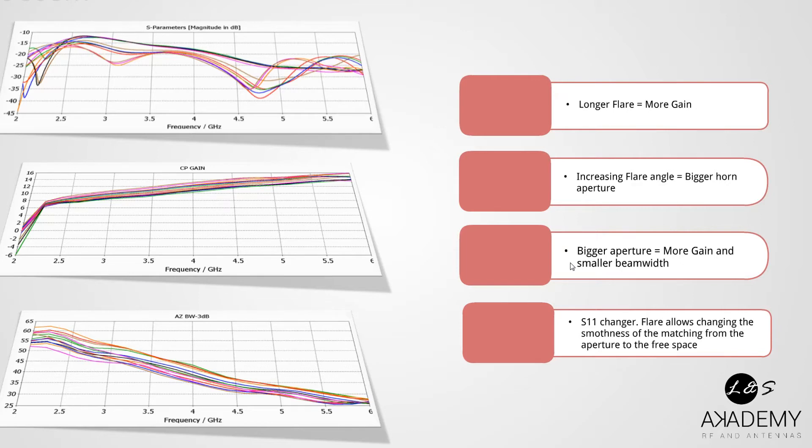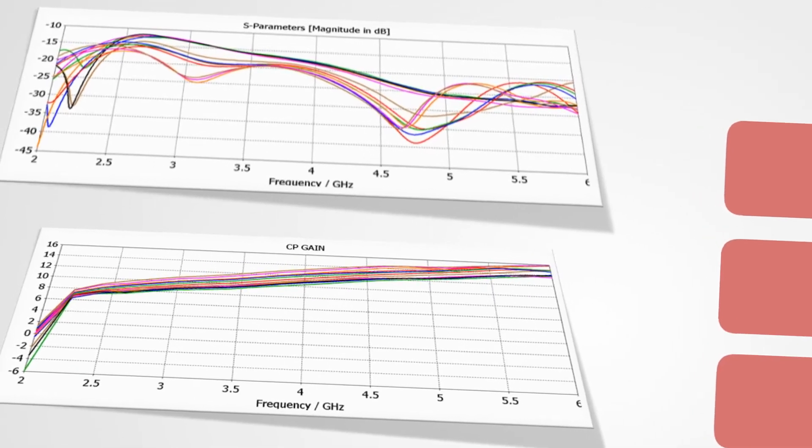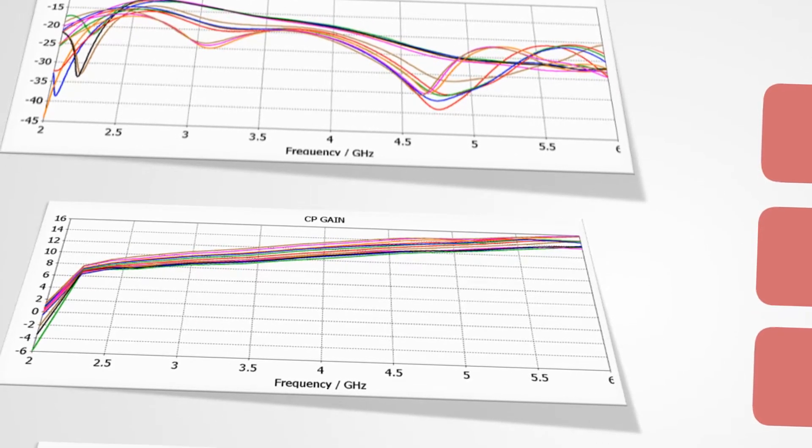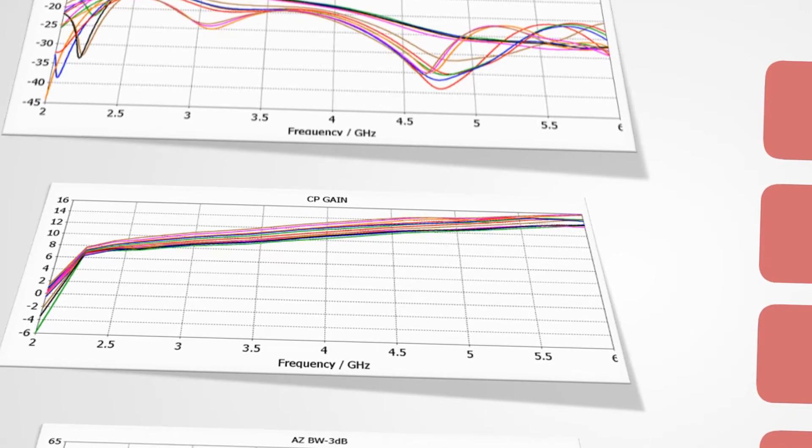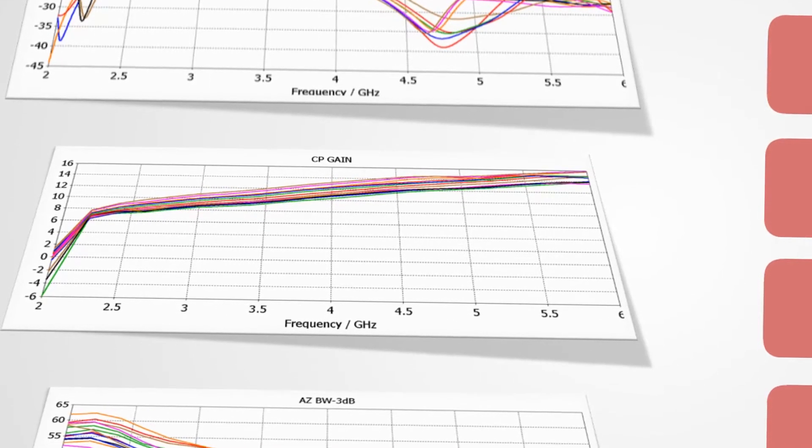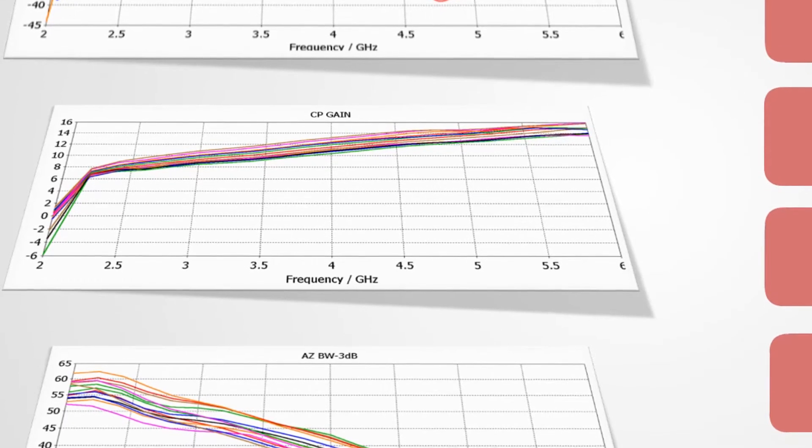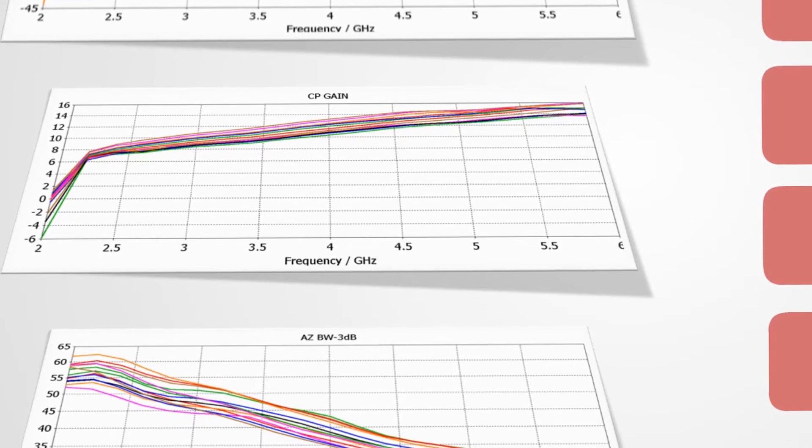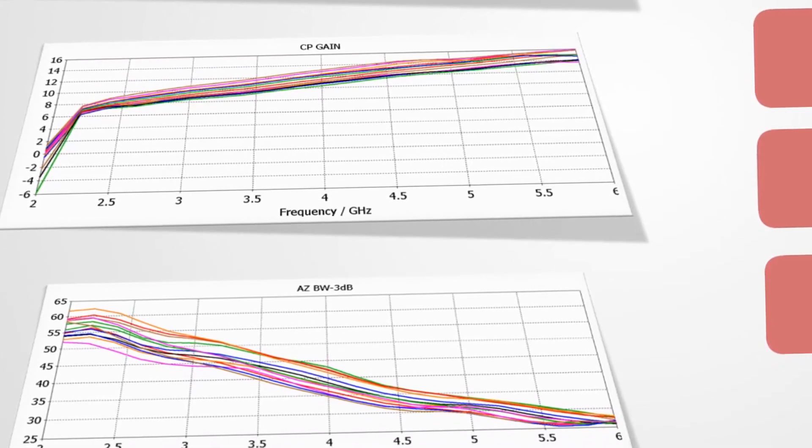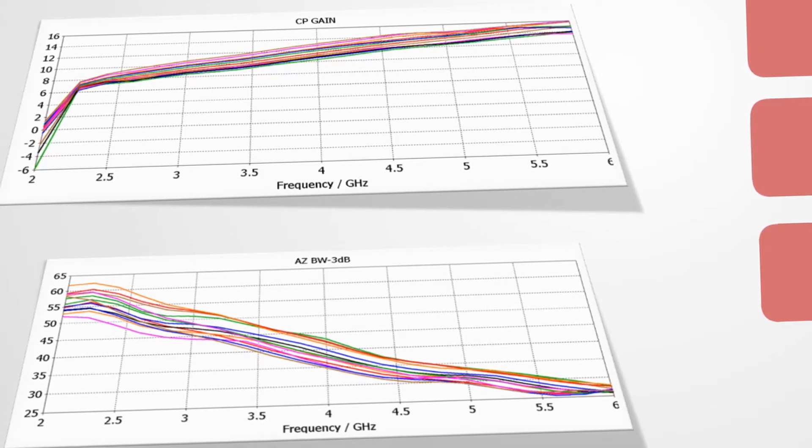And there we go. Here we got three pictures. The first one is regarding the S parameter, so the antenna matching. The second one shows the gain—the copolar component gain, not the cross polar. This one is the copolar, so the desired component. We will explain it later. Keep in mind that this figure shows the gain, and then at the bottom we got the azimuth minus 3dB bandwidth. As you can see, in every single figure it is shown the effect of the flare.